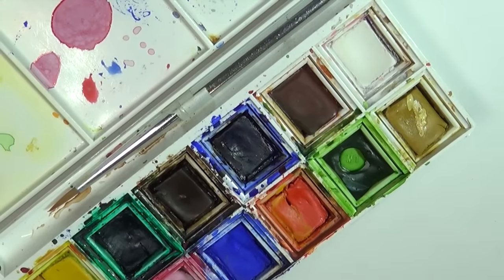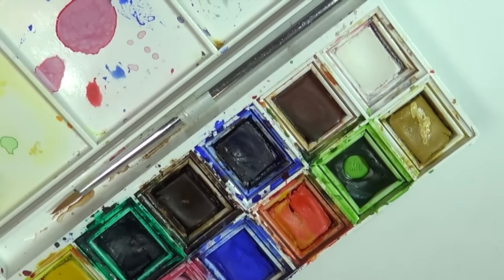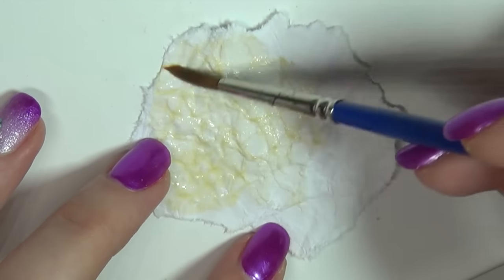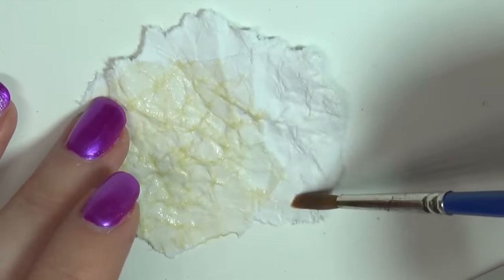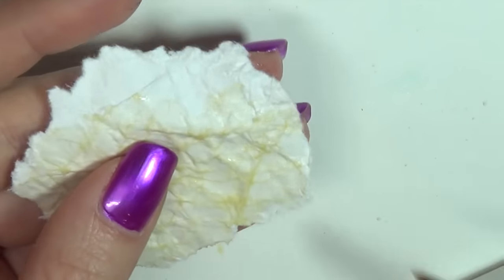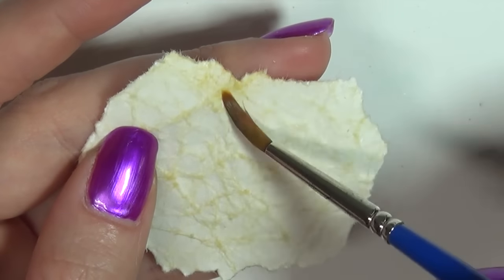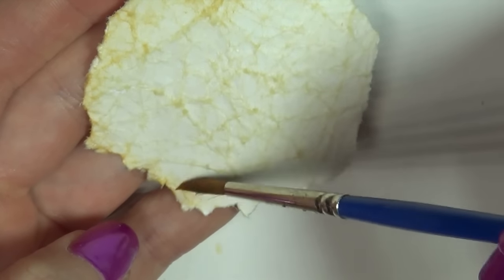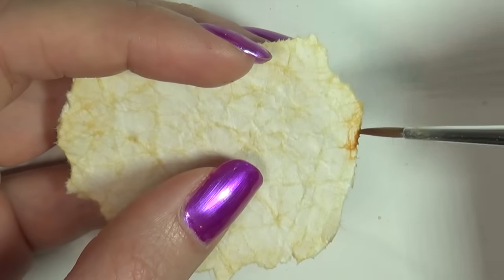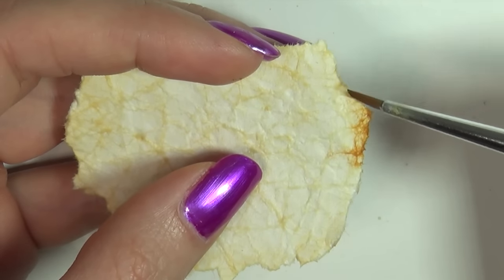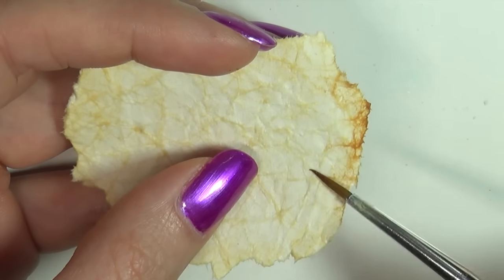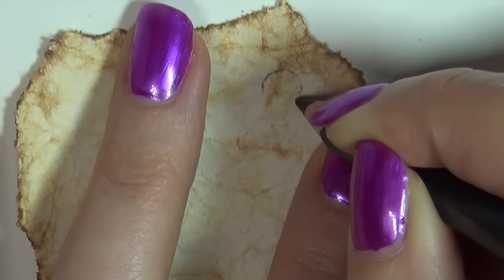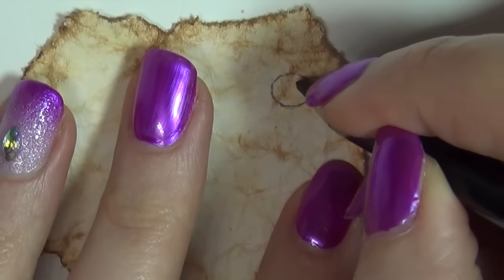To make the map look old and stained I used some watercolors. Finally I draw on the map itself with a black watercolour pencil.